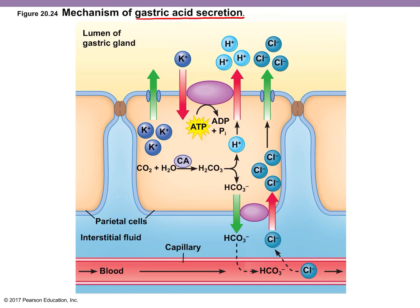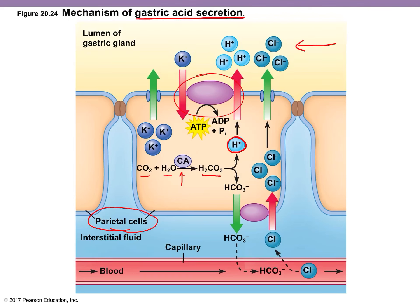Gastric acid secretion: the parietal cells make hydrochloric acid. Here's carbonic anhydrase again — all we need is hydrogen ions and chloride ions to make HCl. Carbonic anhydrase inside parietal cells makes carbonic acid, which dissociates to form hydrogen ions that get actively pumped out — this is called the proton pump, using ATP. Since it's pumping out a positive hydrogen ion, it pumps in a positive potassium ion. For chloride, it's pumped in from the bloodstream via an antiporter with bicarbonate, and then chloride passively diffuses out into the lumen of the stomach.